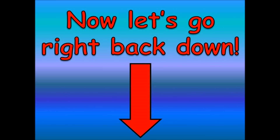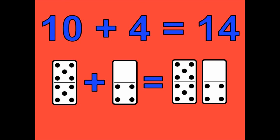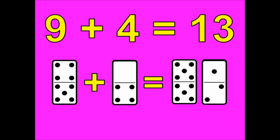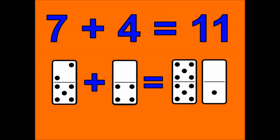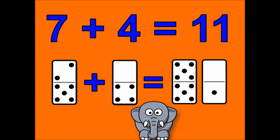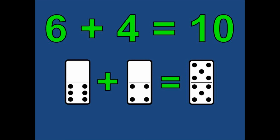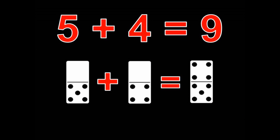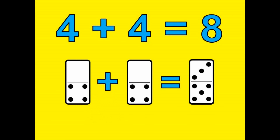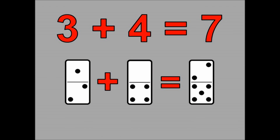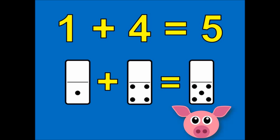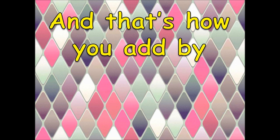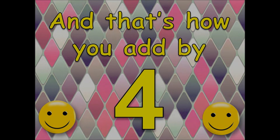Now let's go right back down. Ten plus four is fourteen. Nine plus four is thirteen. Eight plus four is twelve. Seven plus four is eleven. Six plus four is ten. Five plus four is nine. Four plus four is eight. Three plus four is seven. Two plus four is six. One plus four is five. Zero plus four is four. And that's how you add by four.